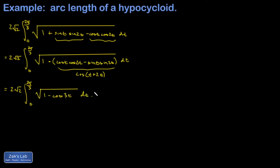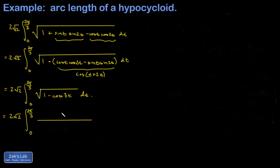I've made a couple of videos on similar integrals and will post links. We have two options: an identity trick or a conjugate method. In this case the conjugate method is simpler. We multiply numerator and denominator by 1 + cos(3t).